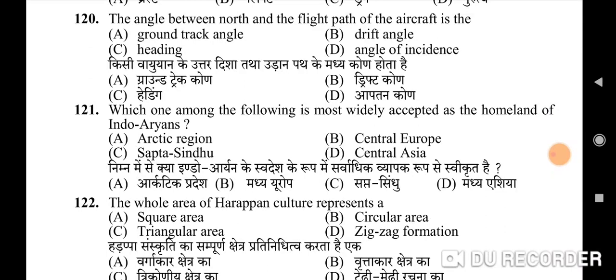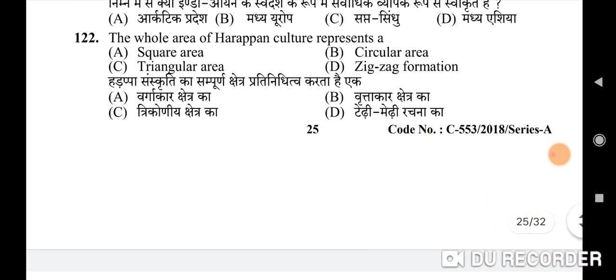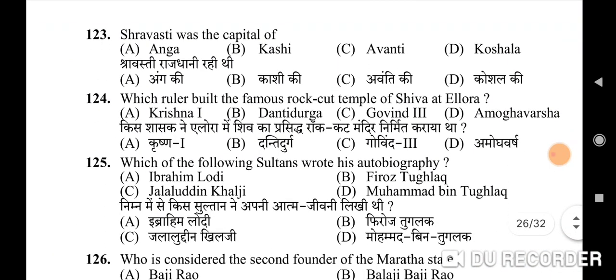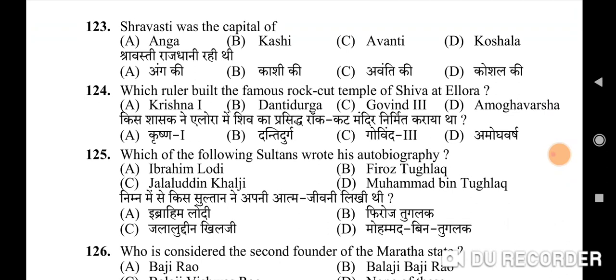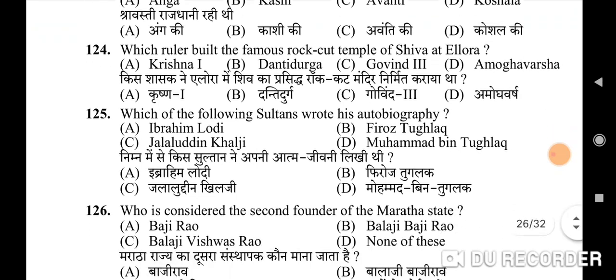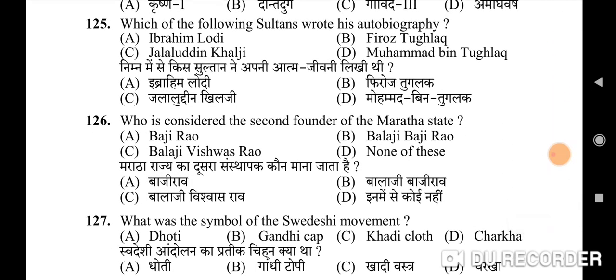121st question: which one among the following is most widely accepted as the homeland of the Indo-Aryans — correct option is D: Central Asia. 122nd question: the whole area of Harappan culture represents a — correct option is C: triangular area. 123rd question: Shravasti was the capital of — correct option is D: Koshal. 124th question: which ruler built the famous rock-cut temple of Shiva at Ellora — correct option is A: Krishna I.